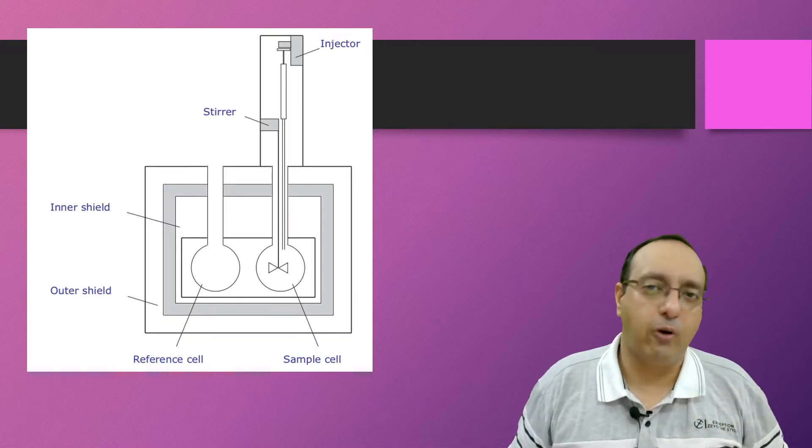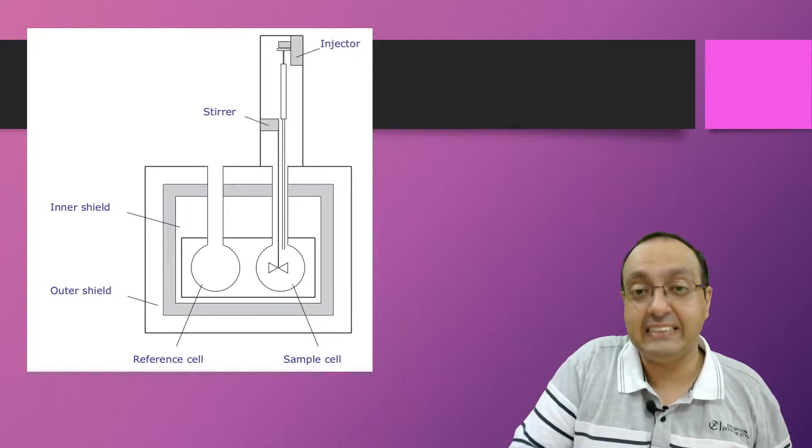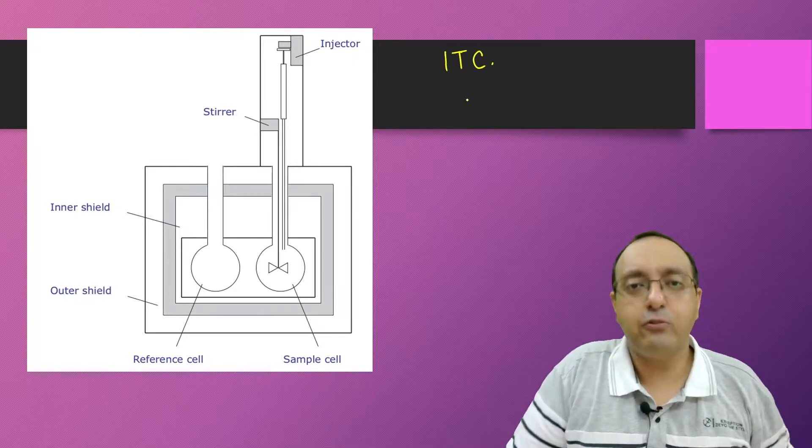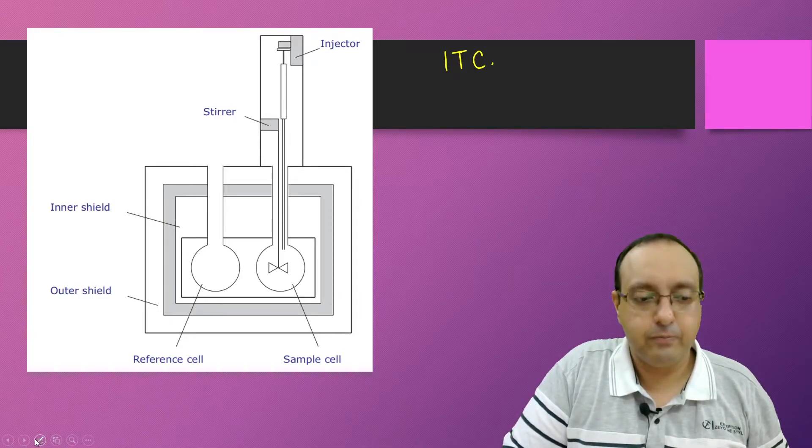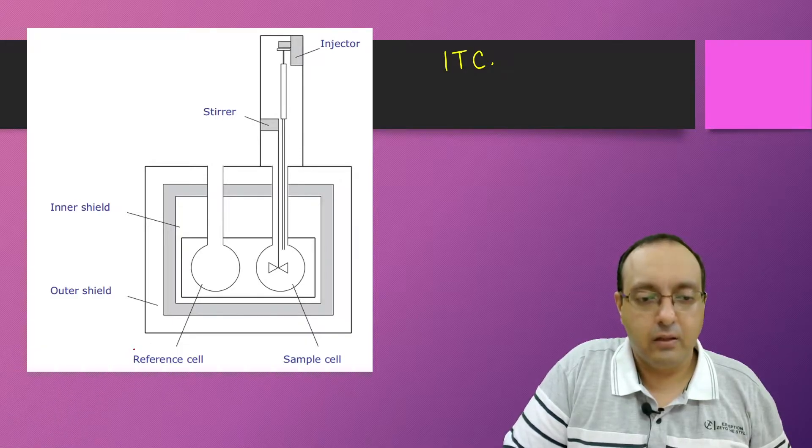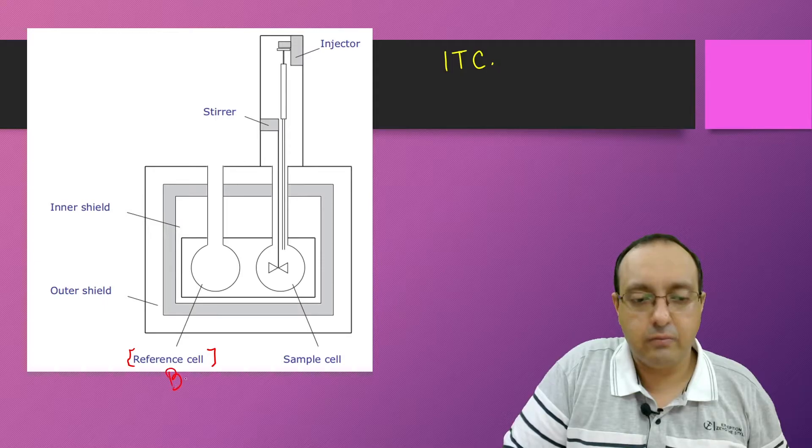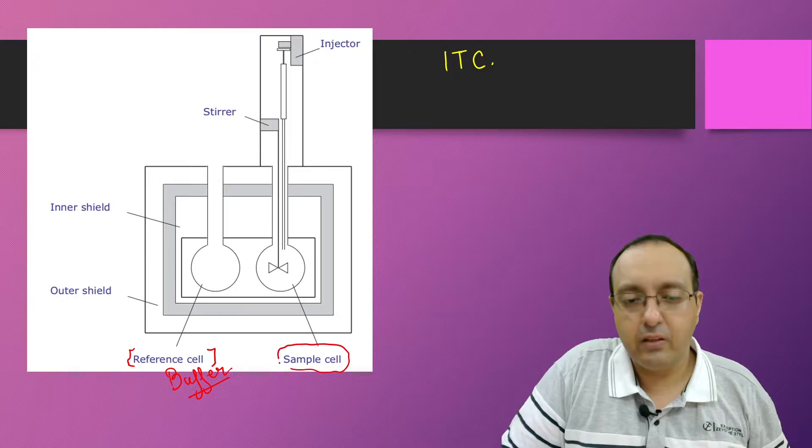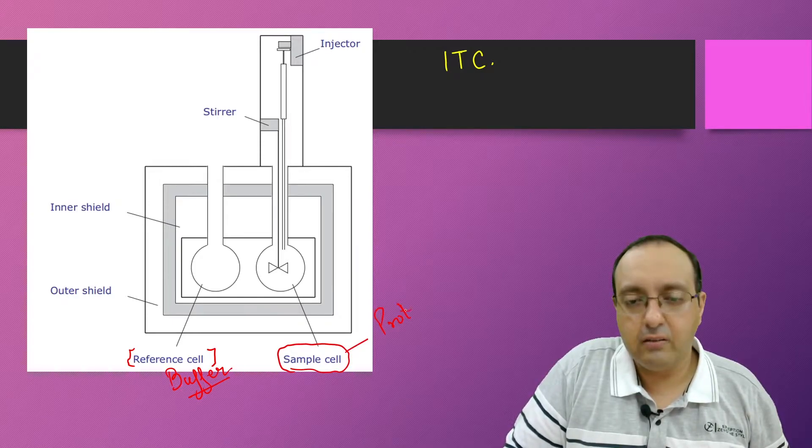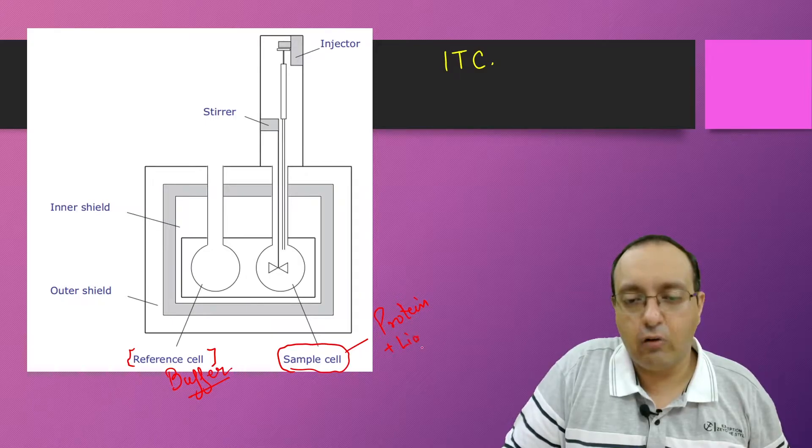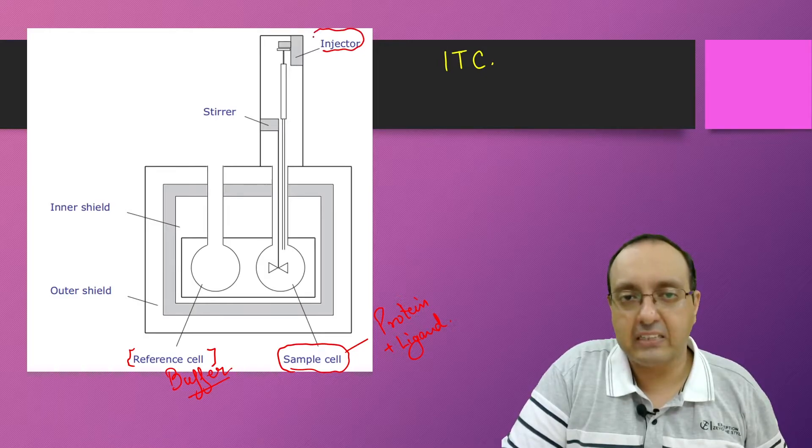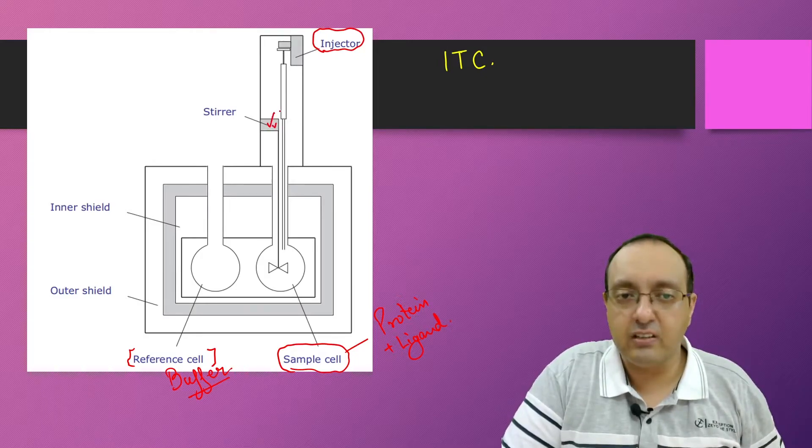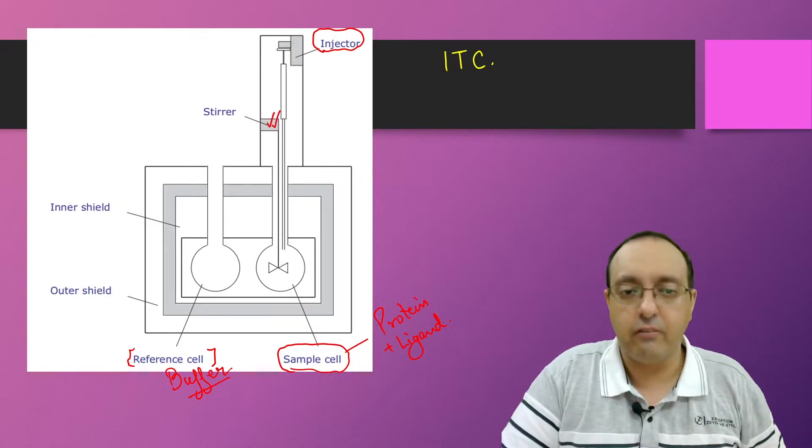This is the basic setup of isothermal titration calorimetry or ITC. We have two cells. We have one cell which is known as the reference cell. It usually contains only the buffer, and then we have the sample cell which has our protein and later on we add the ligand. The ligand is usually injected by this automatic syringe. We also have the stirrer to ensure proper mixing of ligand when we add it.